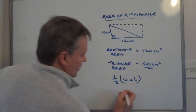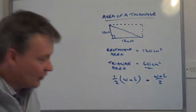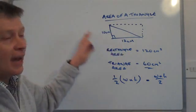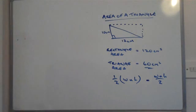Sometimes you might see it as W times H over 2. They all mean exactly the same. It's half of the area, had it been a rectangle. And the same holds true for any sort of triangle. It doesn't have to be a right-angled triangle.